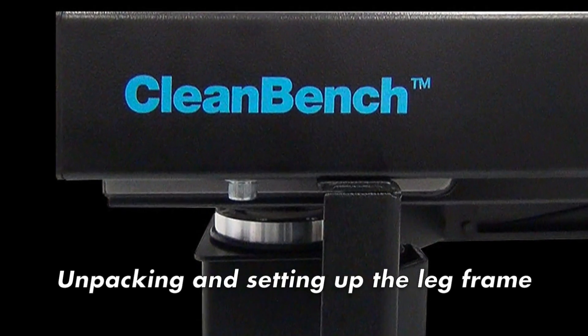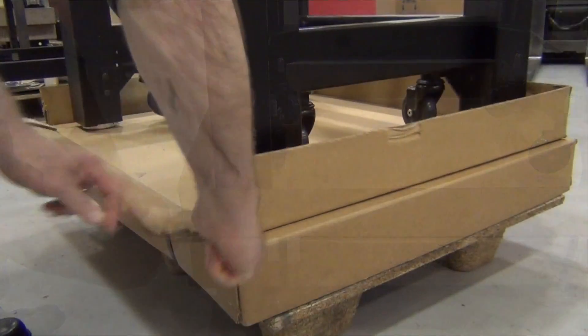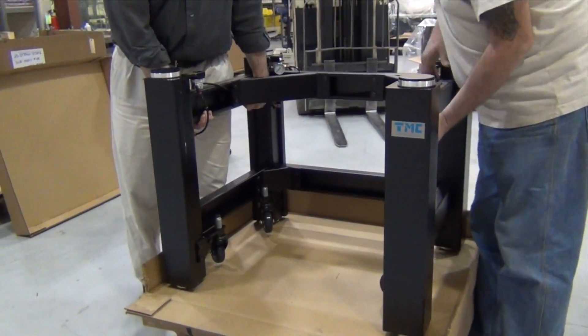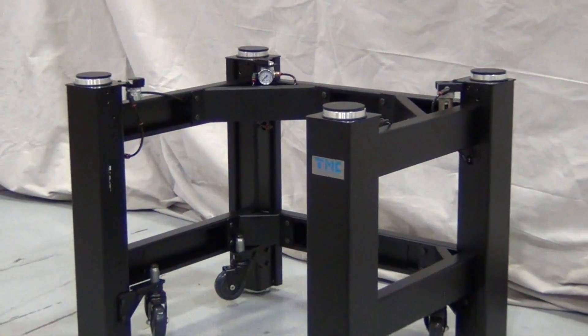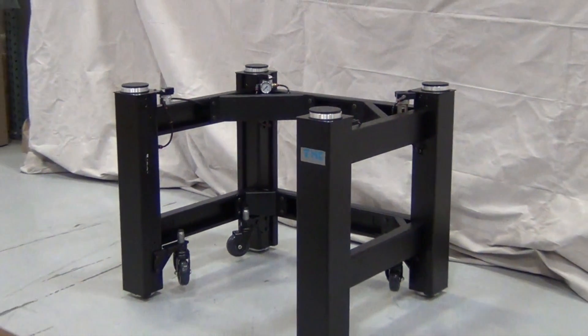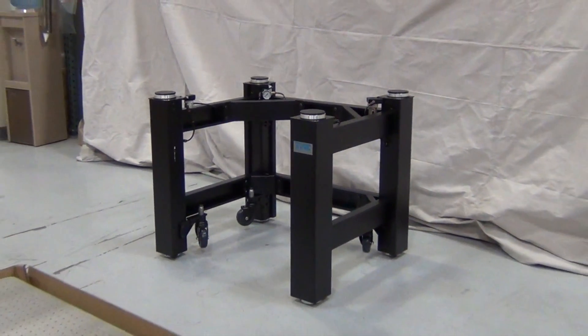For smaller frames, two people can lift it out of the box. To make it easier to lift, we are cutting back the cardboard box. Place the leg frame in the position it's going to sit in the lab. Once the top is in place, it is more difficult to move.